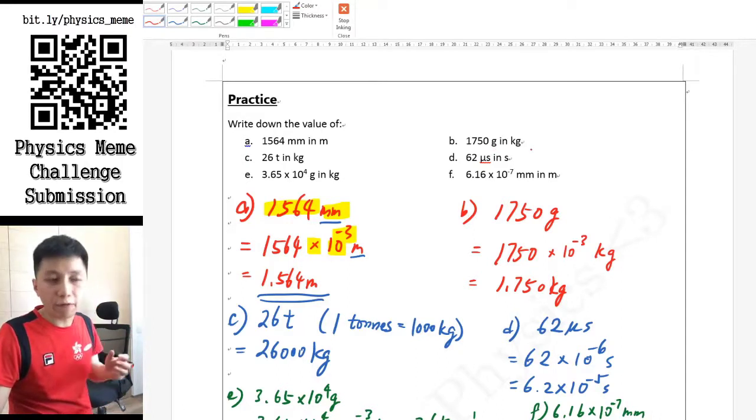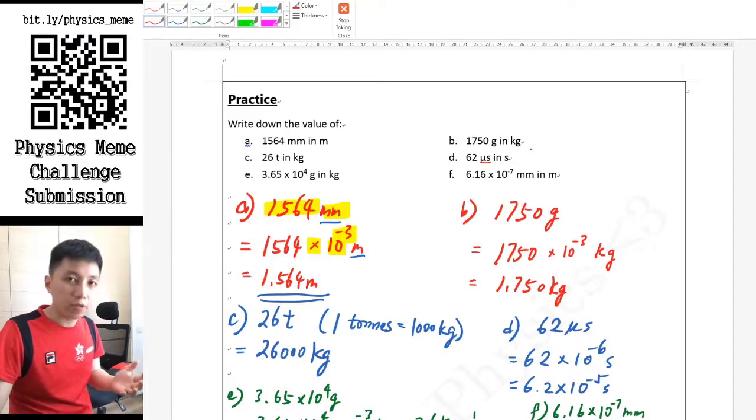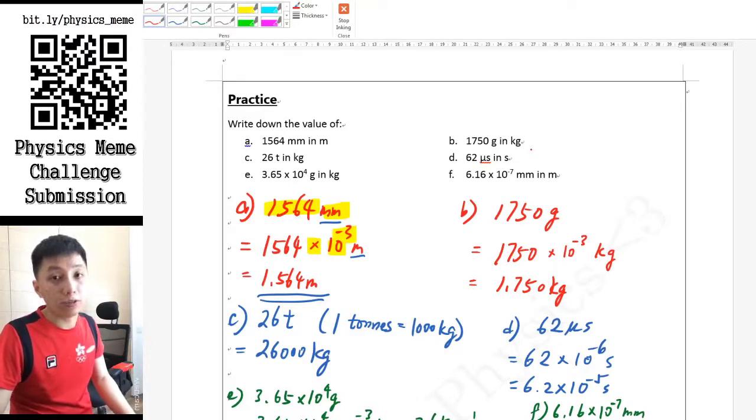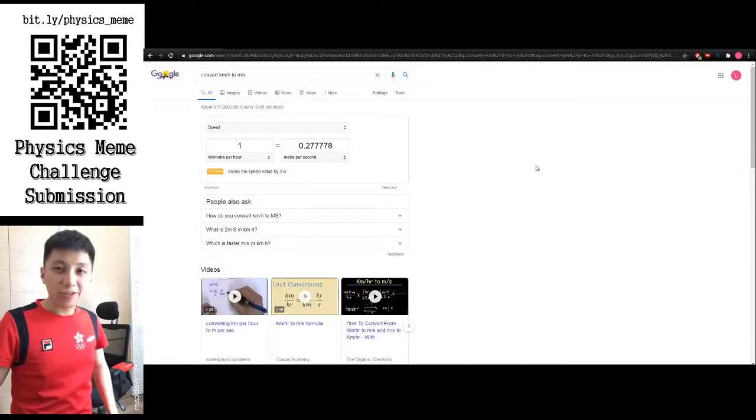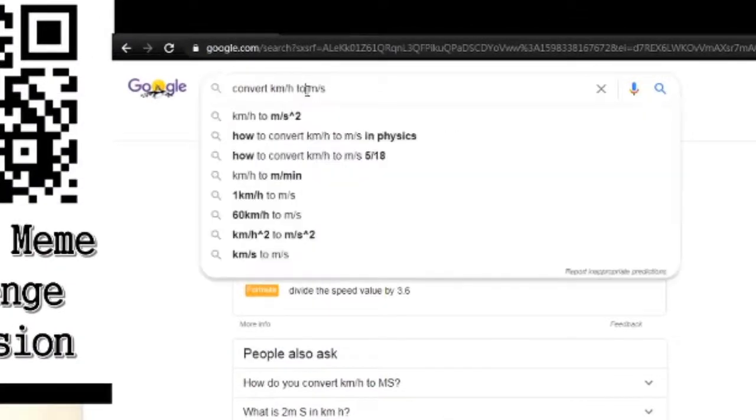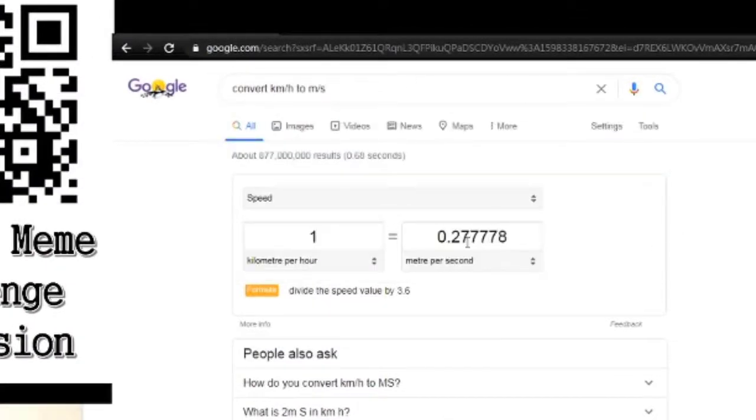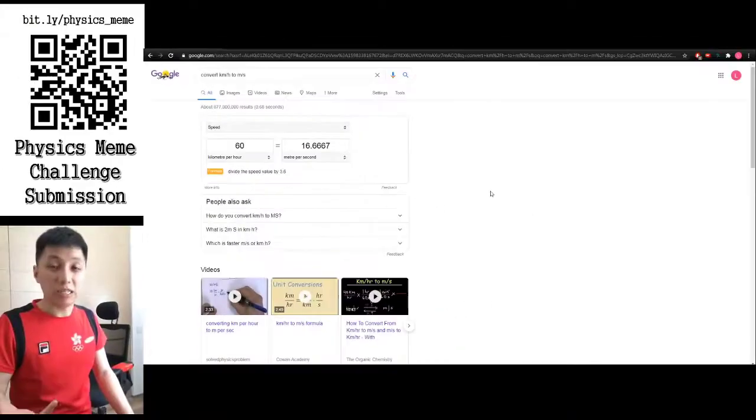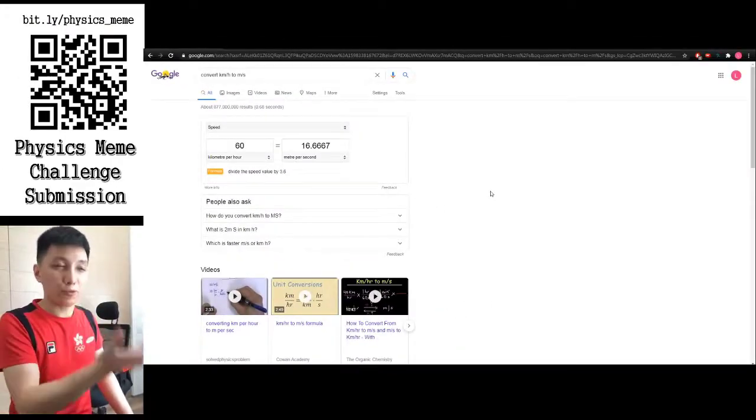Actually, the easiest way has nothing to do with physics - just simply go to Google. You type convert km per hour to meter per second, and you can get a calculator to do that. For example, if you do 60, they will tell you it's about 16.7 meter per second. Of course, this is not something I want to teach you really, but this is an option we can use to confirm your answer.